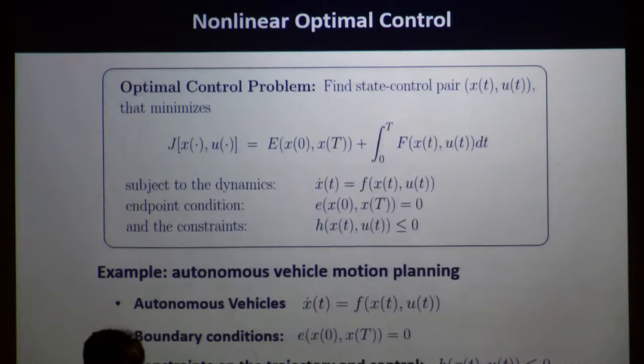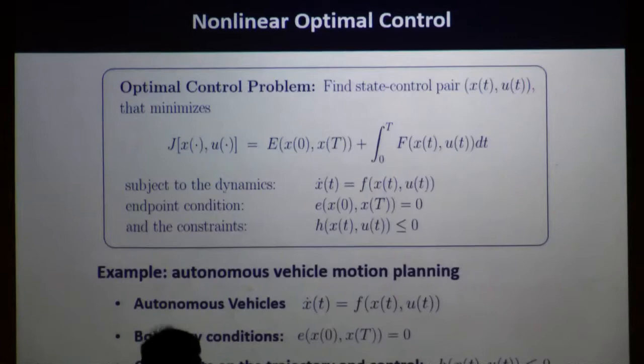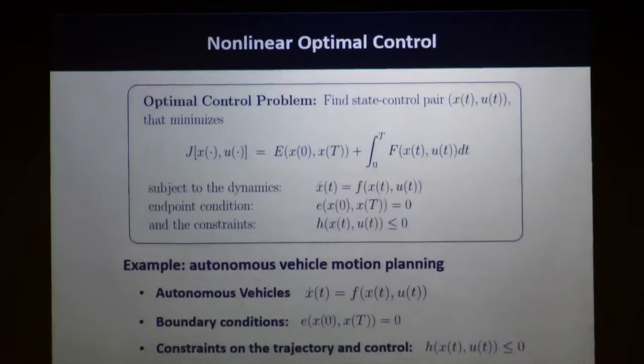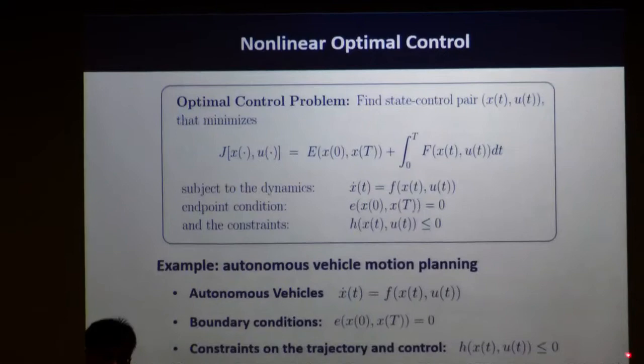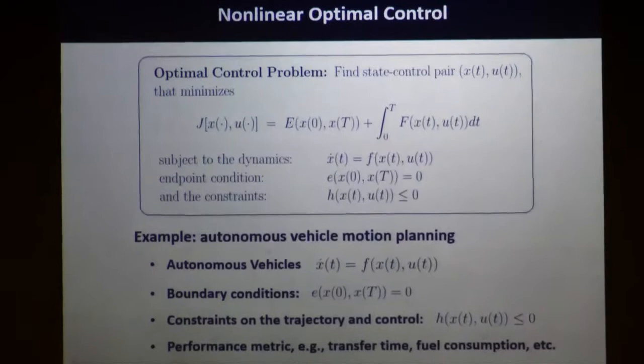For any control application, you always have other types of constraints. For instance, for a ground vehicle, you have constraints on velocity and turning rate — those are control constraints. You also don't want the trajectory to hit some obstacle, so those path constraints are grouped into what we call path constraints. When you design a control signal, you typically want to optimize some performance such as transfer time or fuel consumption, and those can be modeled in this framework.